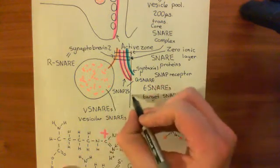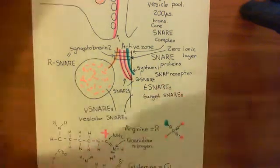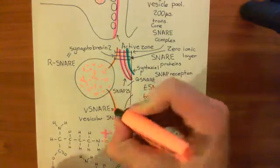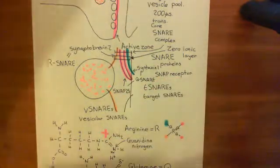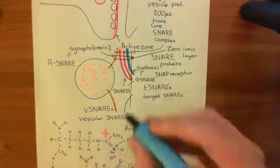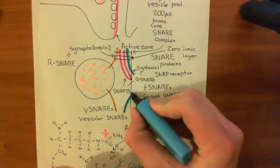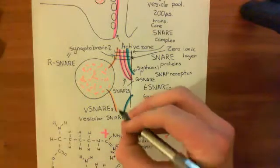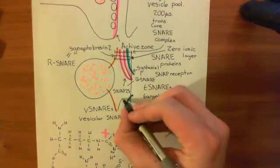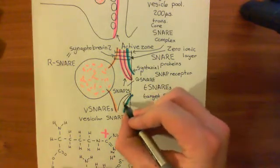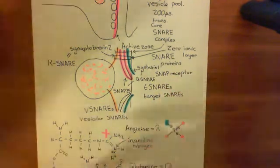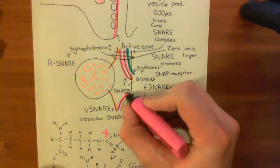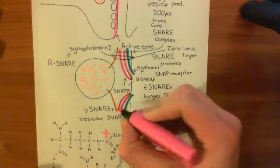Let me draw another one here to make the picture nice and symmetric. Here we have another synaptobrevin-2 molecule, which is embedded in the membrane of the vesicle. Here we have another syntaxin-1 molecule embedded in the plasma membrane. And here we have another SNAP25, which contributes these two alpha helices, attached to the plasma membrane.